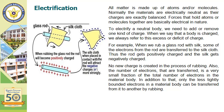Now we will move on to electrification — the process of electrifying neutral objects. We all know matter is made up of atoms or molecules. Normally, materials are electrically neutral because their charges are exactly balanced — they contain equal numbers of electrons and protons. To electrify a neutral body, we need to add or remove one kind of charge. When we say a body is charged, we always refer to this excess or deficit of charge.